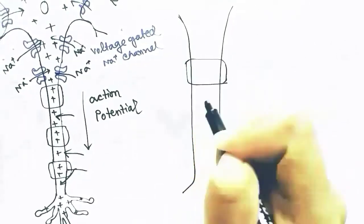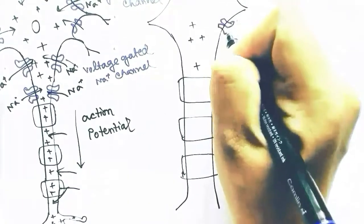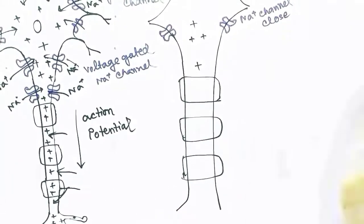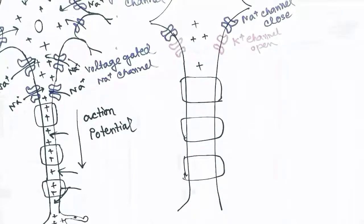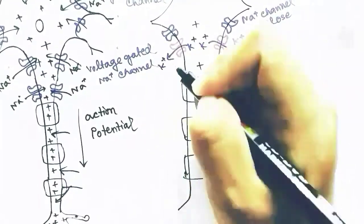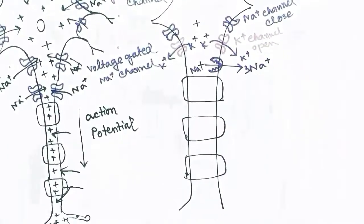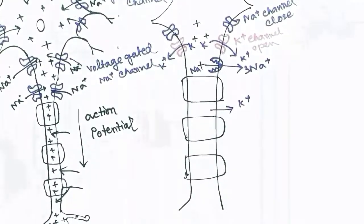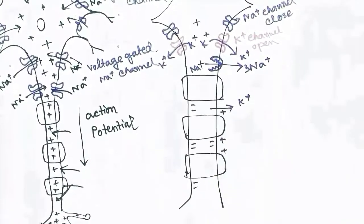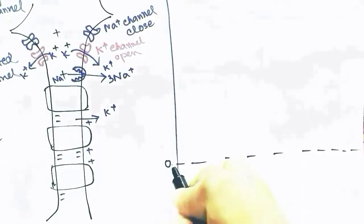When the action potential has passed, the sodium channels close and potassium channels open. As potassium is concentrated inside, it goes outside, releasing positive charge from inside. The sodium-potassium pump then pumps 3 sodium ions outside in exchange for 2 potassium ions, thus releasing more positive charge from inside the cell.